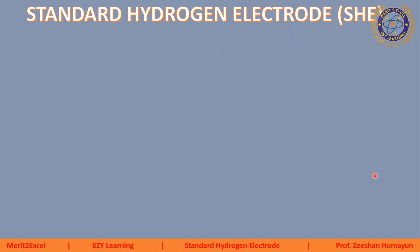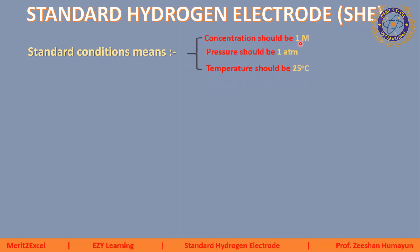Agla topic hamara ek aur important topic hai jise hum kehte hain Standard Hydrogen Electrode, jise short form mein SHE likha jata hai. Exam mein is ka bhi question banta hai. Standard hydrogen electrode potential ko describe karna hota hai. Naam se pata chal raha hai ke hydrogen ka koi electrode potential banate hain, lekin 'standard' ka word isliye likha hai kyunki standard conditions chahiye — concentration of solution should be 1 molar, pressure 1 atmospheric, aur temperature should be 25 degrees Celsius.